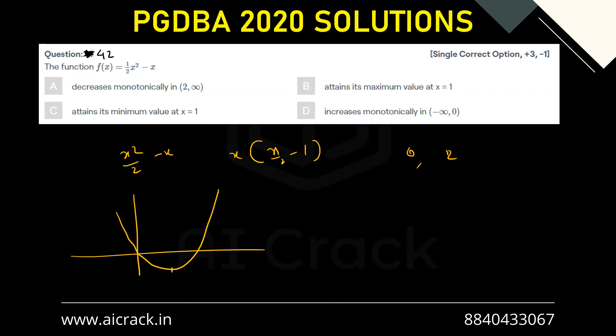We know that this vertex is at the midpoint of these roots, so this would be x = 1. We can clearly see that at x = 1 it is attaining a minimum value. That gives us the answer as C. Let's check the other options as well.